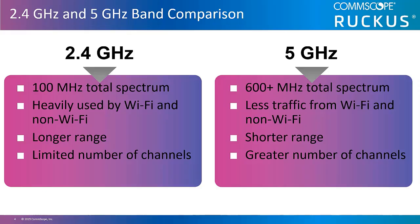The 2.4 and 5 gigahertz bands are both unlicensed bands available for many different applications. The 2.4 gigahertz band has been heavily adopted by both Wi-Fi and non-Wi-Fi wireless devices. Lower frequencies have better range characteristics than higher frequencies when using the same power, making them more useful at longer distances. Additionally, 2.4 gigahertz radios are normally less expensive due to their popularity.